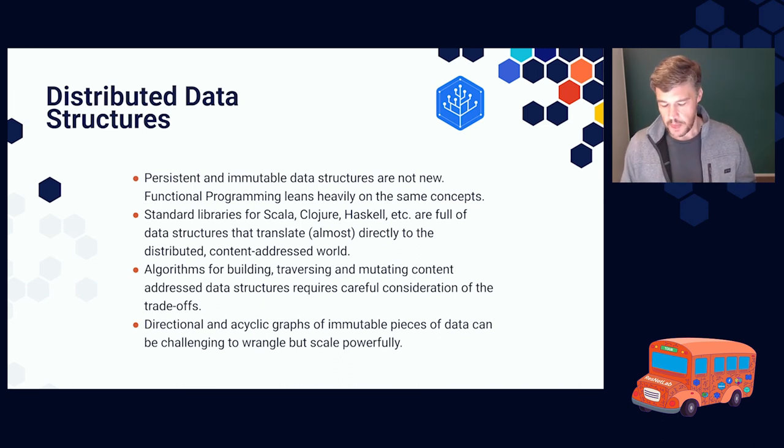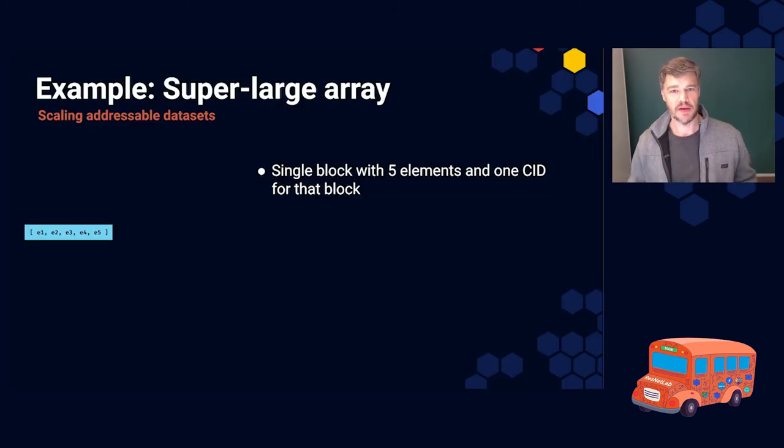So, content addressing gives us the ability to scale. That's one of the nice things with content addressing. We can do distributed data structures peer-to-peer and we can scale them almost arbitrarily. We do not have to be limited by our hard drives or our memory if we can do these things peer-to-peer and store them in distributed systems. So I have an example here. We're going to call it a super large array.